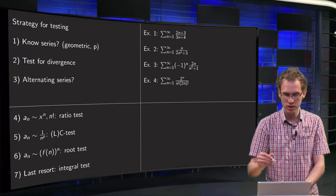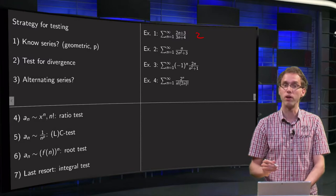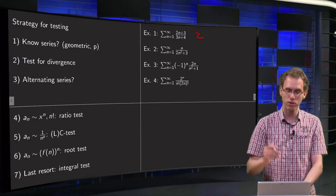Oh, we already see that it tends to 2 over 3, so test number 2 will work best. We already see the terms will not tend to zero.